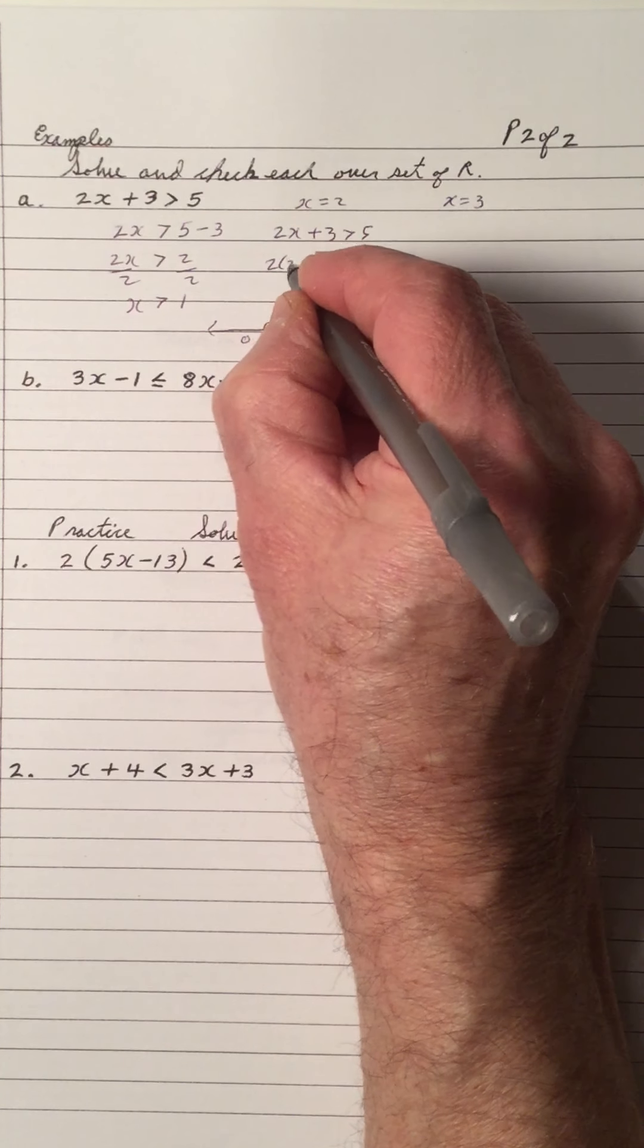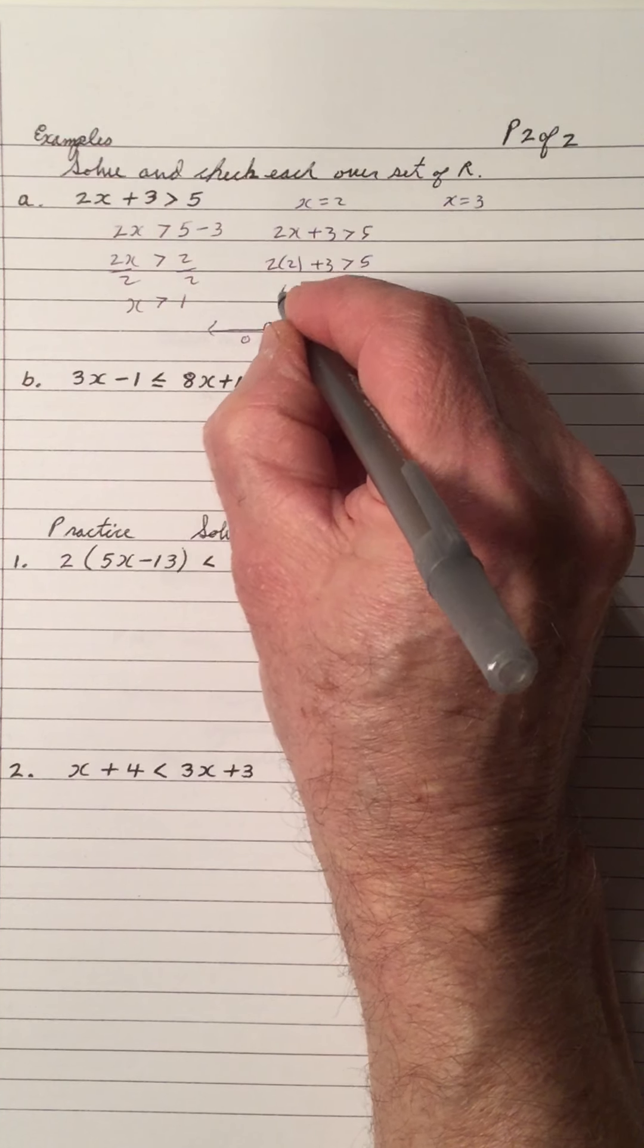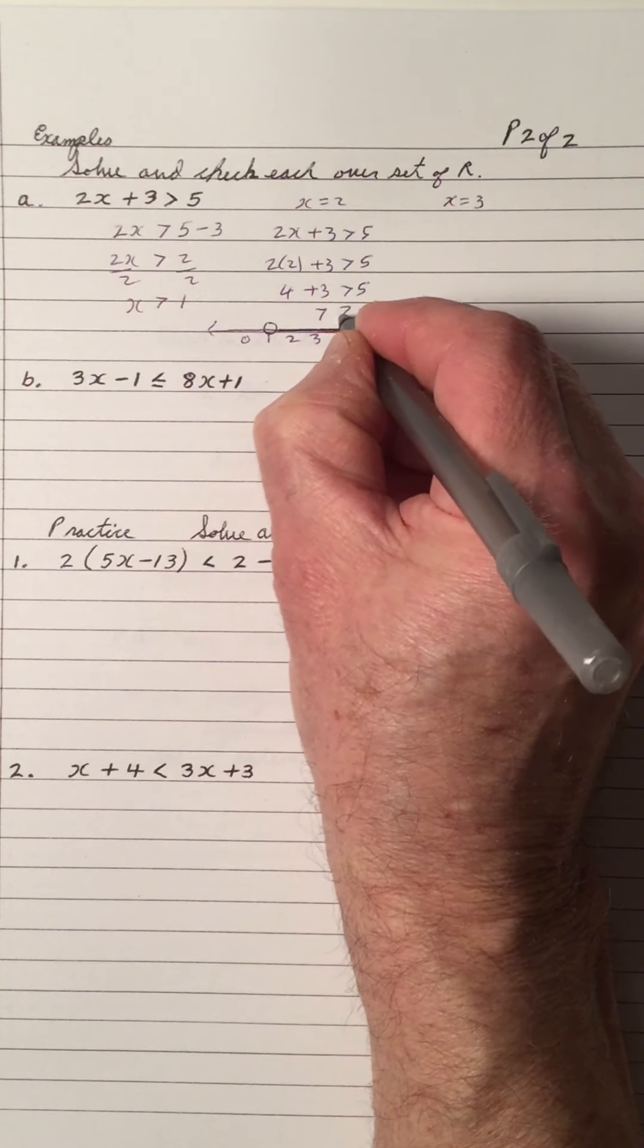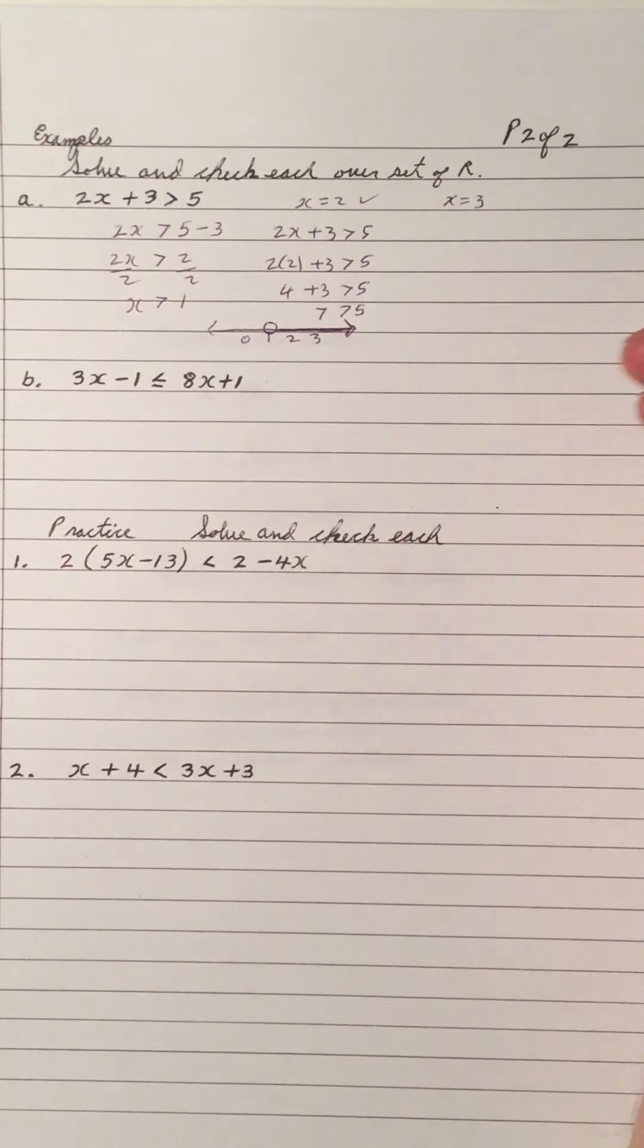So if I write down the inequality, there it is. I sub 2 in the place of x, and 2 times 2 is 4, plus 3 is greater than 5. 7 is greater than 5, so 2 is a solution. But there are many solutions.